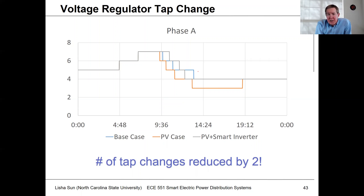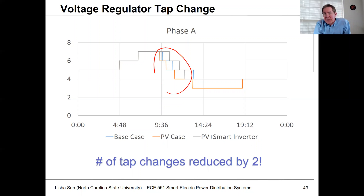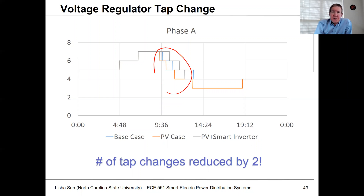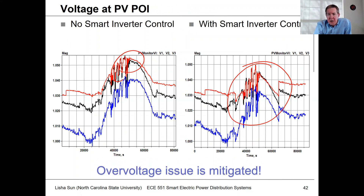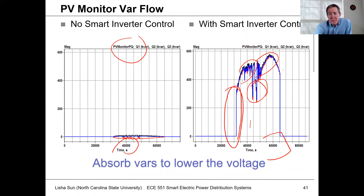Inverters are almost like variable capacitor banks. Some people have been looking at using inverters to do voltage control instead of tap changers. The problem is: would you want inverters operating all the time, even when there's no sun? And developers may not want their systems used that way. This is a research area — using inverters for var control does mean you have to oversize them a bit.